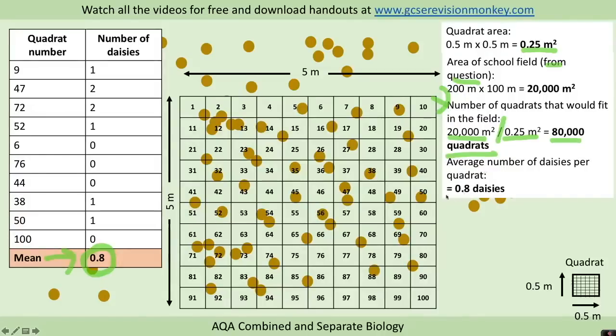If 80,000 quadrats fitted in our field and the number of daisies in each quadrat was 0.8 as an average, then the estimated number of daisies in the whole field would be our number per quadrat multiplied by the number of quadrats. So 0.8 times 80,000 gives us a total estimate of 64,000 daisies.